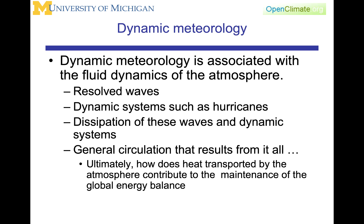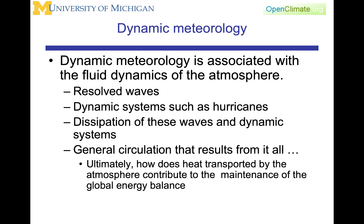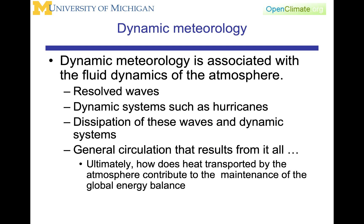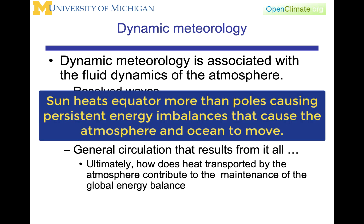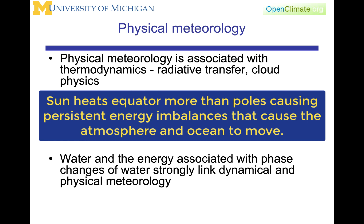That leads us to the idea of the general circulation — what comes out of all of this motion that is the result of trying to redistribute heat, to mix gradients or differences in heating that we see in the global energy balance. These are driven by the sun, and the fact that the sun heats the equator more than the poles, and the poles go through strong seasonal changes leading to very strong temperature gradients from differential heating.